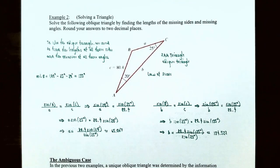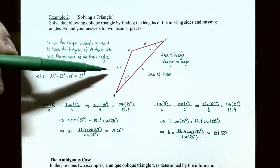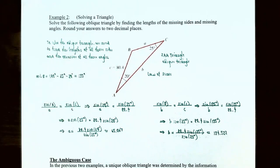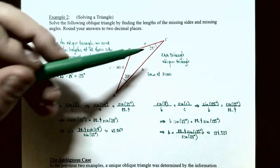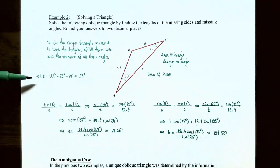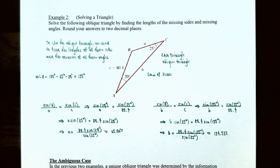Example two: solve the following oblique triangle, finding the lengths of all missing sides and missing angles, rounding to two decimal places. We're given angle A = 20°, angle C = 25°, and side c = 80.4. Sides a and b and angle B are unknown. Since angles must sum to 180°, angle B = 180° − 25° − 20° = 135°. This is an obtuse angle.